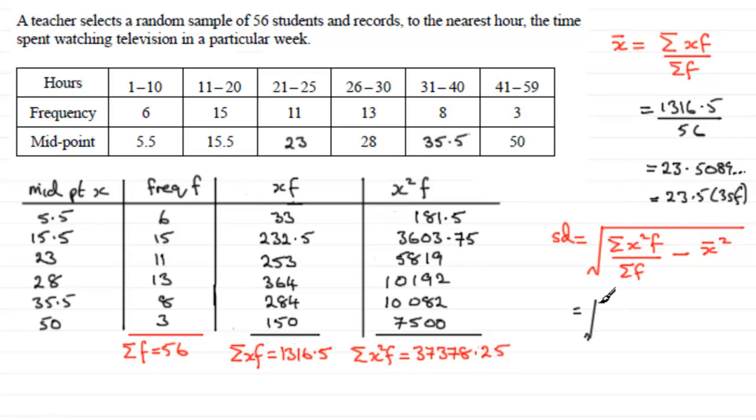So if we just squeeze it in here, we've got sigma x squared f, 37378.25, and that's divided by sigma f, which is 56, and then minus the mean squared. So you should really use the unrounded version. I'm just going to put 23.5 in there because I really haven't got much room.